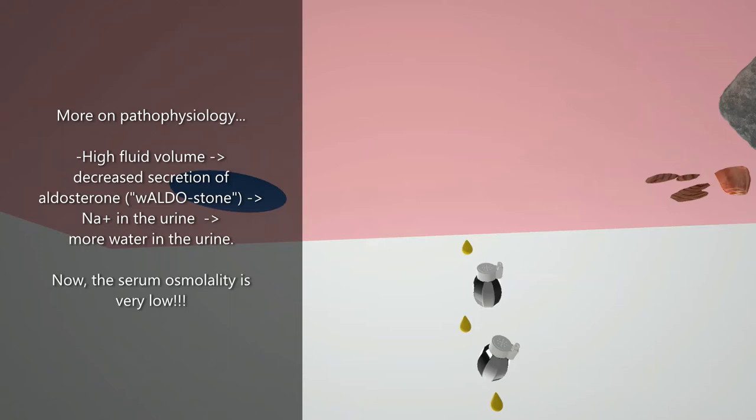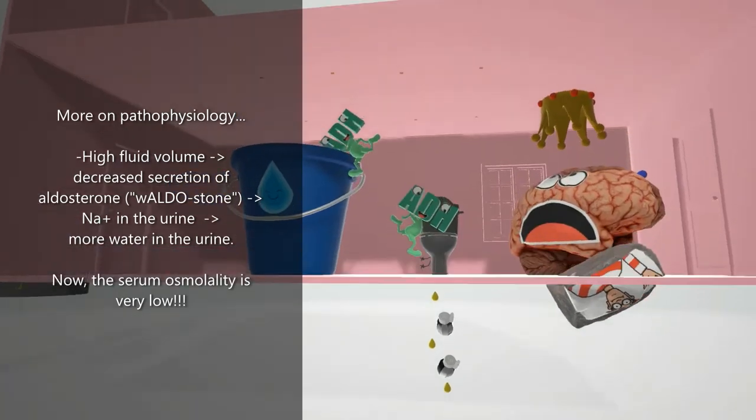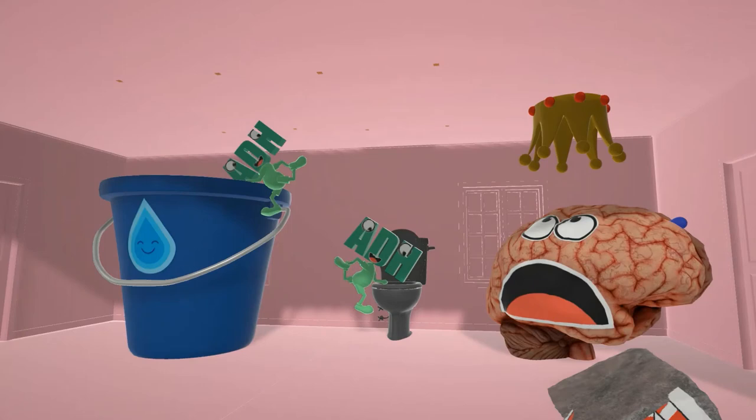Water likes to follow sodium, so fluid goes down into the toilet. This is really problematic because due to the free water retention, the serum osmolality is already going to be low, and now more sodium is being lost. This leads to a really low serum osmolality, which is what drives the symptoms seen in SIADH.